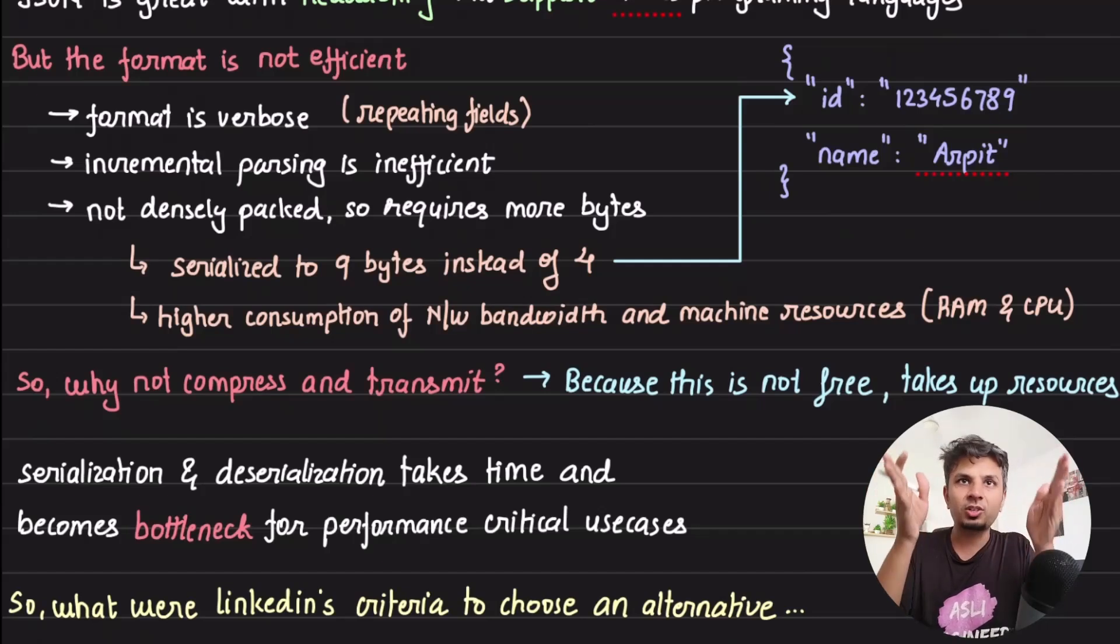When I'm transmitting an integer in JSON, I would literally send 123456789 as these bytes - so nine bytes to represent this integer. But I could have sent the integer as integer in binary encoded form as four bytes. So this is where inefficiencies start to kick in - it is not densely packed and it becomes inefficient at scale.